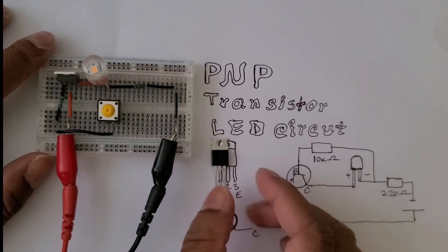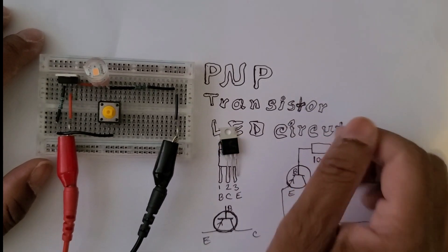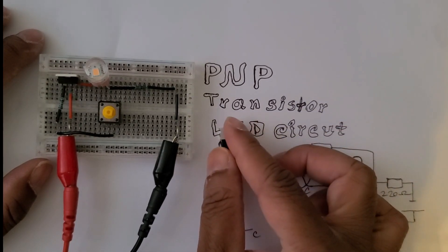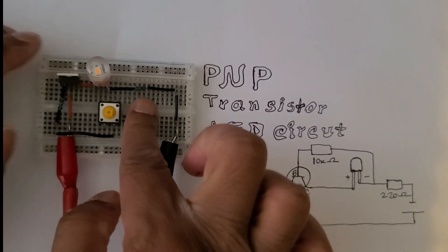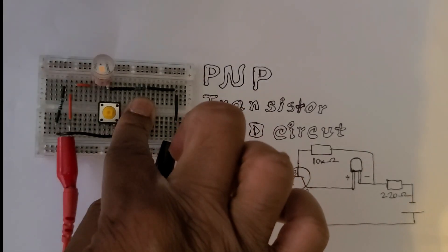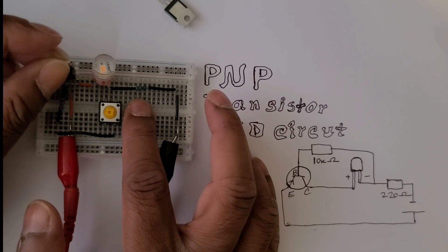This circuit should work with any PNP transistor. Here I'm using TIP 42C as well as TIP 32C. As you can see, I just replaced the transistor and it should work.